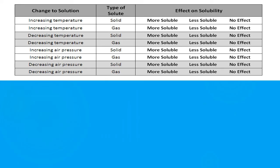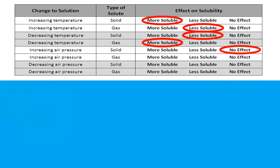Let's summarize. If we increase temperature on a solid, it becomes more soluble. If we increase temperature on a gas, it becomes less soluble. Decreased temperature of a solid makes it less soluble; decreased temperature of a gas makes it more soluble. Increased air pressure on a solid has no effect; increased air pressure on a gas makes it more soluble. Decreased air pressure on a solid has no effect; decreased air pressure on a gas makes it less soluble.